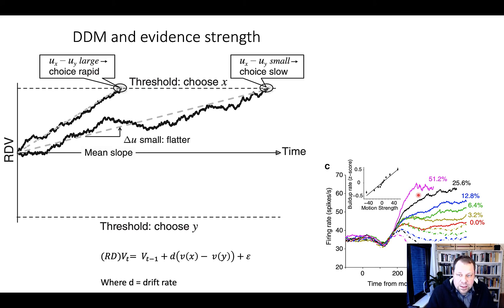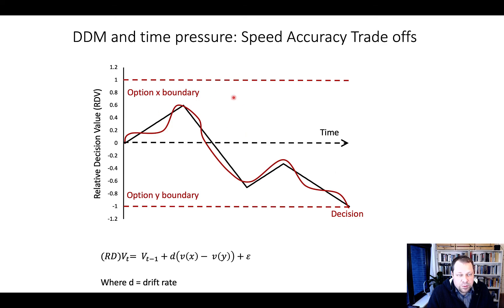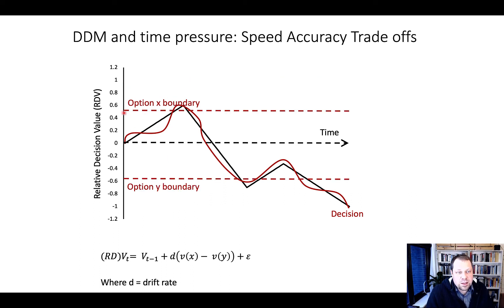Another thing this model flexibly accounts for is speed-accuracy trade-offs. We can adjust the boundaries and how much evidence we require to make a decision. If we have less time, we can lower the boundary and make a decision when a lower threshold is crossed.